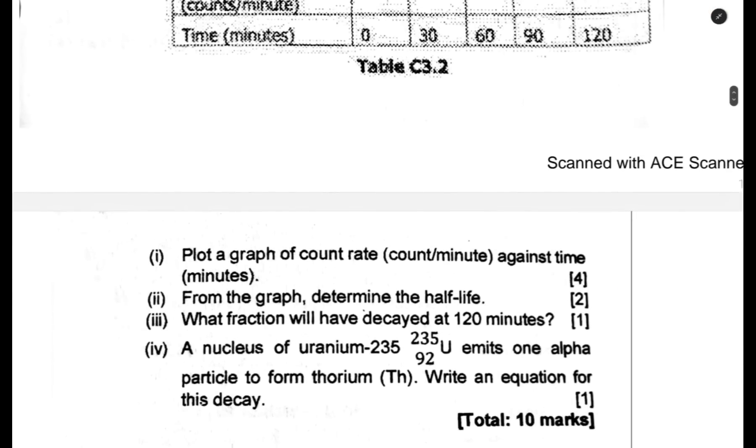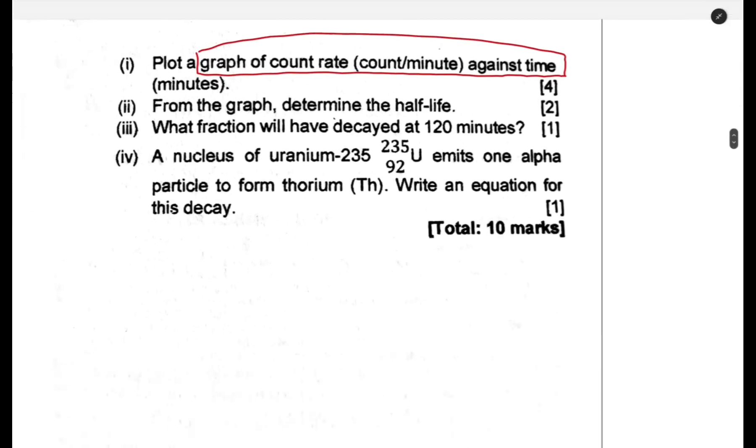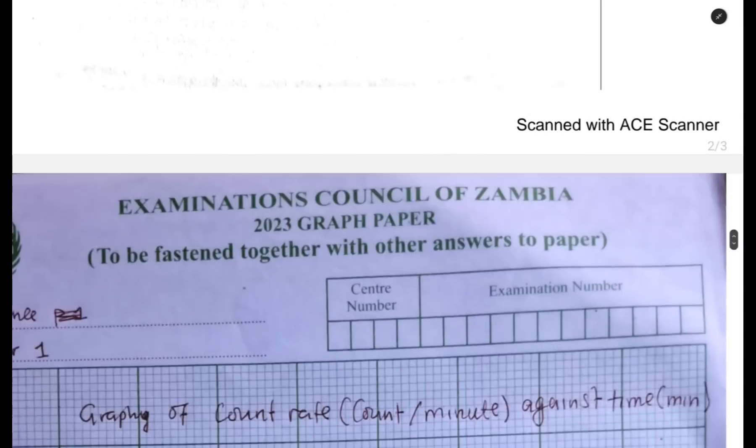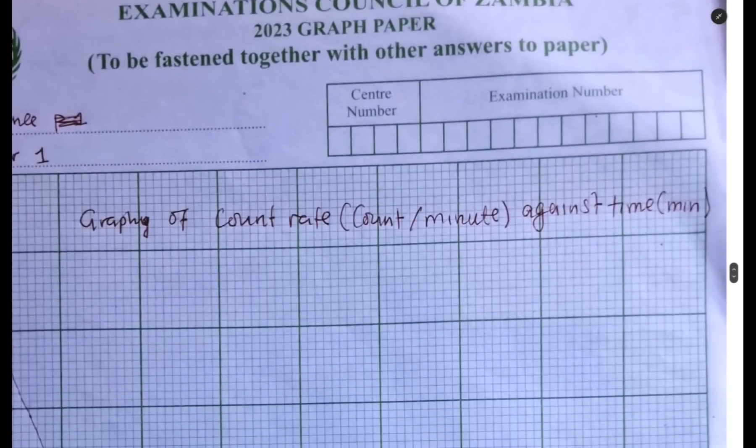The question is: plot the graph of count rate (count per minute) against time. The title of the graph we are going to get is 'Graph of count rate, count per minute, against time in minutes.' One thing you should know when plotting a graph: there should be a title. I've plotted it already, but some information we need to put.